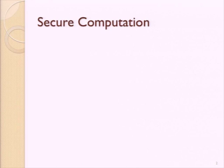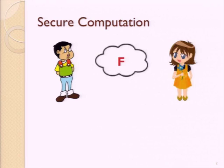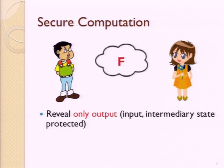Today I'm going to present our work that achieves secure computation with sublinear amortized work. Let's start by defining the problem of secure computation. We have Bob and Alice, and they have some function they want to compute together. This function depends on the inputs that both Bob and Alice have, so they want to run a protocol that allows them to get the output of this function.